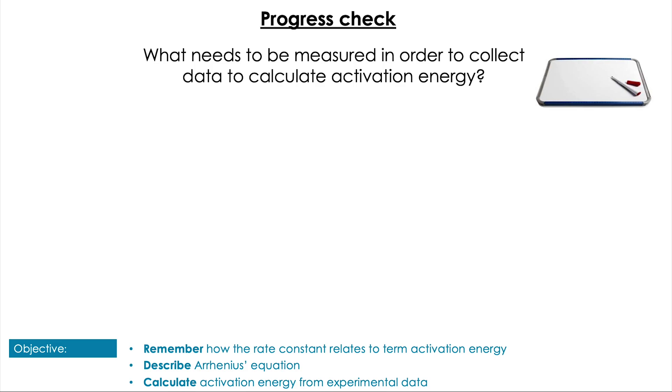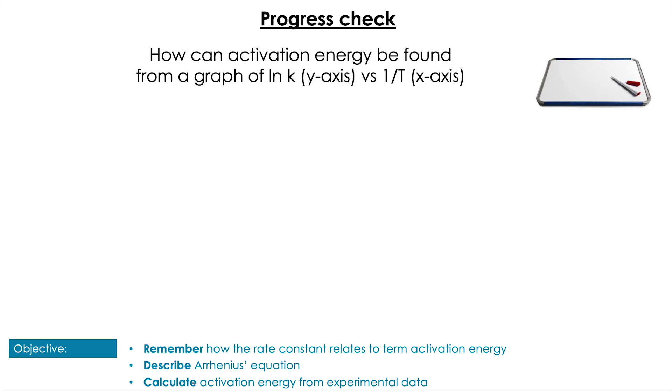Let's do a couple of questions then before we finish up. First question: what needs to be measured in order to collect data to calculate the activation energy? Pause the video. So of course, we need to measure the rate of reaction while changing the temperature - so measuring the rate of reaction at different temperatures. And then from that, we're going to be able to process that rate of reaction data to be able to calculate the rate constant at each temperature. So next question: how can activation energy be found from a graph of ln k versus 1 over T? Pause the video.